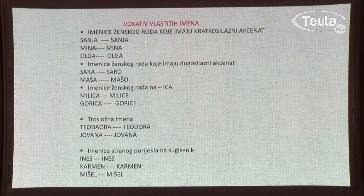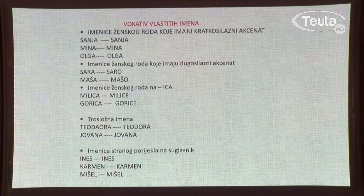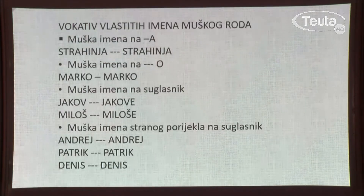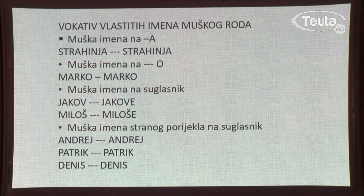Trosložna imena — Teodora, Jovana, Marija — također imaju isti oblik u vokativu. Imenice stranog porijekla koje se završavaju na suglasnik, kao što su Ines, Carmen, Mišel, zadržavaju svoj oblik u vokativu i glase: hej, Ines; hej, Carmen; hej, Mišel.